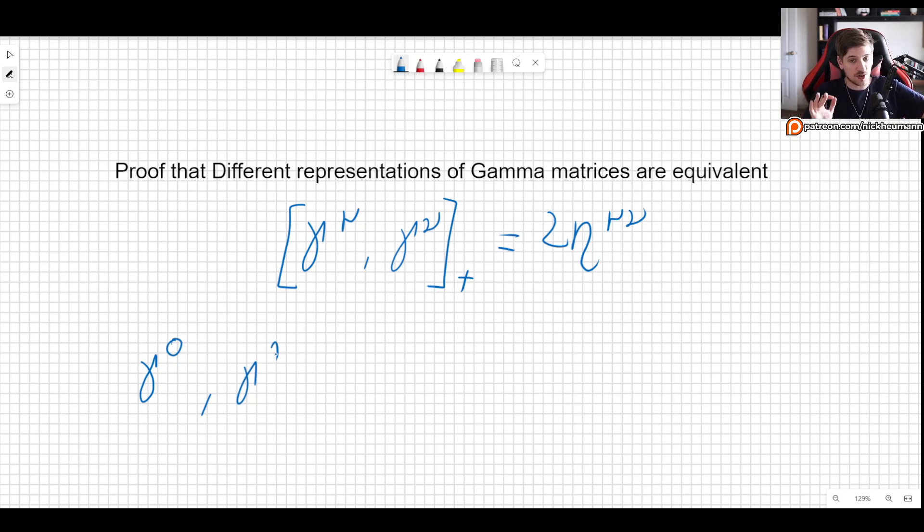All of them satisfy the conditions of gamma matrices, but they are different. And I have said that they are equivalent, right?